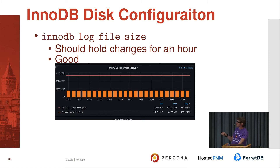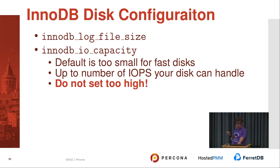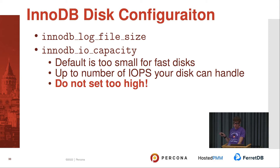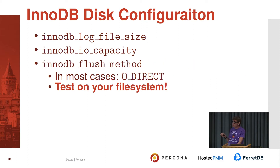InnoDB log capacity is how fast InnoDB would write in the background. The default is created for spinning disk — you likely don't need to use the default. But don't set it too high either, because InnoDB could try to write too fast for your disk. It should be roughly the number of IOPS your disk can handle. InnoDB flush method: this is how InnoDB flushes data — it's good for both performance and data safety, but test on your system because some file systems don't work well with O_DIRECT.